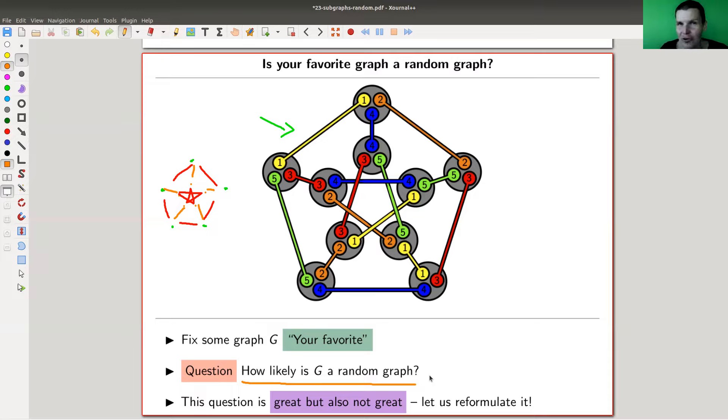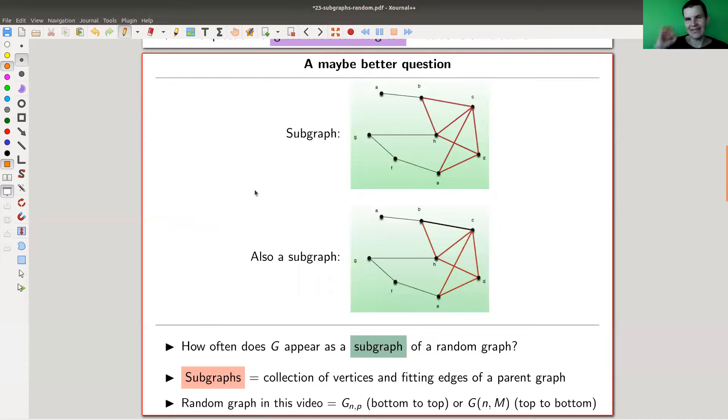So I will reformulate the question to make it better to understand, or maybe not better to understand but certainly easier to mathematically verify. Here's the real question: I take a graph and I ask how likely does it appear, or how often does it appear as a subgraph of a random graph. That random graph is well defined, we had two models of them, and I will mostly stick with the coin flip model where there was a probability p.